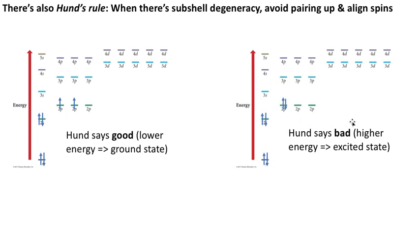Hund would say this is bad. This is a higher energy state. There's nothing illegal about it. It doesn't violate the Pauli exclusion principle because they're paired up. But since Hund really wanted us to split them up into separate orbitals, that is to say avoid pairing and align spins, we would say this must be higher energy or an excited state.